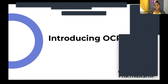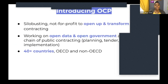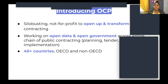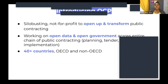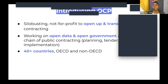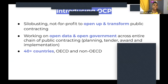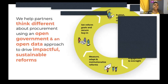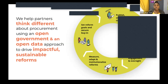I'll talk a little about our organization, Open Contracting Partnership. OCP is a silo-busting not-for-profit organization that seeks to open up and transform public contracting. We work on open data and open government across the entire chain of public contracting — from planning to tender to award and to implementation. We're active in over 40 countries, both OECD and non-OECD, and we help partners think differently about procurement using an open governance and open data approach to drive impactful and sustainable change.